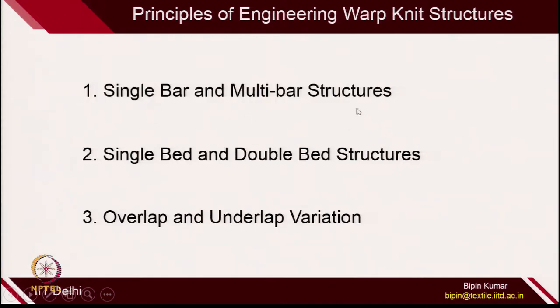Just a quick recap: if you want to engineer different types of warp knitted structures, there are 3 principles. Either you can go for single bar or multibar structure. In this particular lecture, I will be focusing only on single bar structure. Once you have chosen single bar or multibar on the machine, you can either go for single bed or double bed machine — the bed represents how many needle beds you are using. Once the bar and bed choices are made, you can go for overlap and underlap variations, as discussed in the last class.